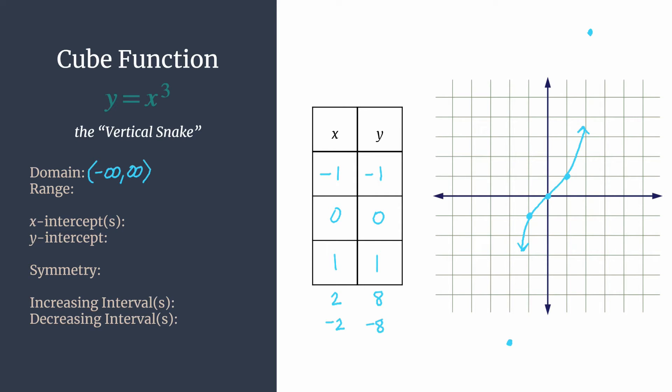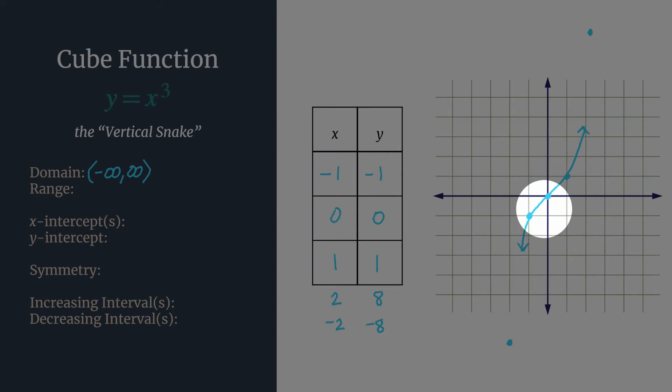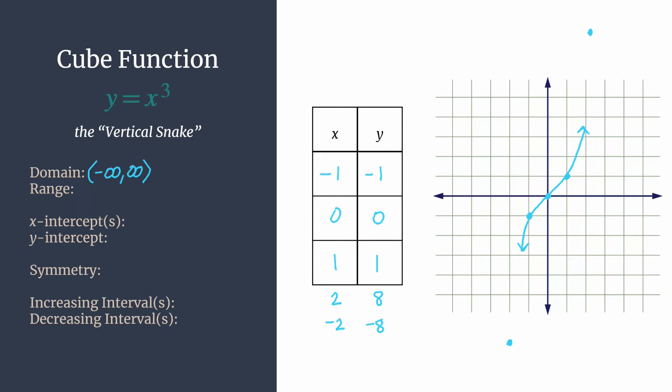And our range is a list of all our possible y values. So same idea. It's all real numbers again. But this time, remember, with range, you want to look from bottom to top to keep you focused on you're looking at the y values. But if you look from the very bottom, so your graph goes like this, you can see all y values are included on this graph. So let's write from negative infinity to infinity.